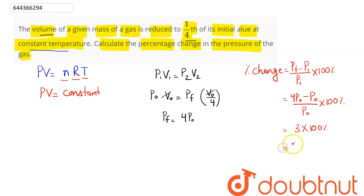300% is the corresponding change in the pressure of the gas when volume is reduced to one-fourth of initial volume. Hence this is our answer. For Class 6 to 12, IIT-JEE and NEET level.